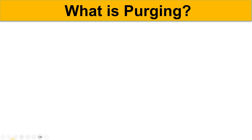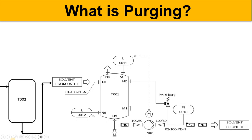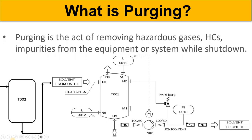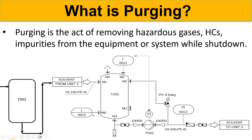Do you know that while shut down we purge the lines and equipment whenever we hand over our system to maintenance? So why is that purging required? What is the purging? We are going to discuss in this video. Hello, Core Engineering family! Basically, purging is the act or the process of removing hazardous gases — that could be anything: hydrocarbons, all the impurities.